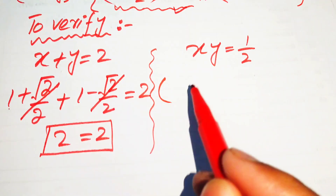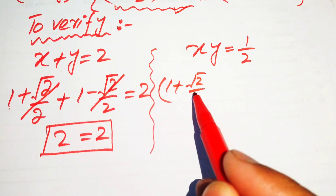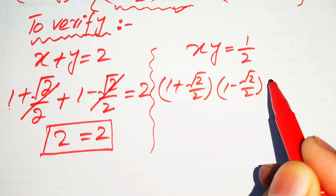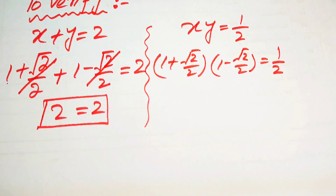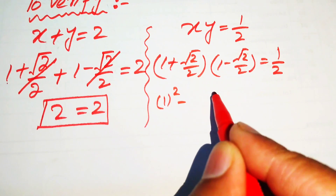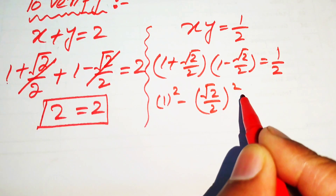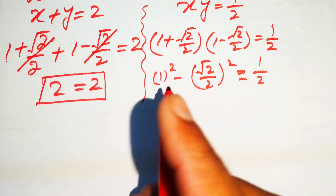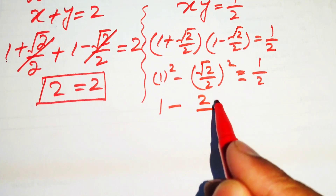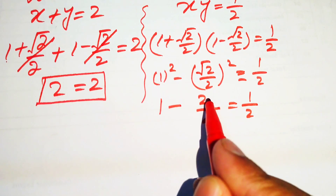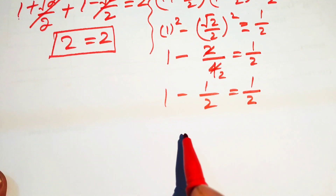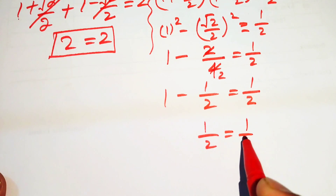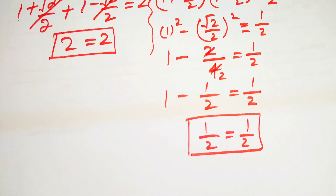For the second equation, xy equals (1 plus square root of 2 over 2) times (1 minus square root of 2 over 2). This is in the form (a plus b)(a minus b), so we apply that identity to get (1 squared minus (square root of 2) squared) divided by 4, which is (1 minus 2) divided by 4. Simplifying gives 1 minus 1 over 2 equals 1 over 2, confirming the first solution satisfies both equations. This is the final answer.